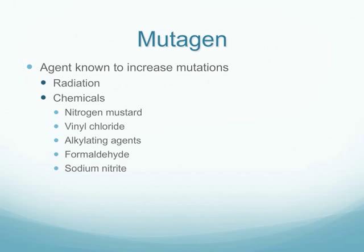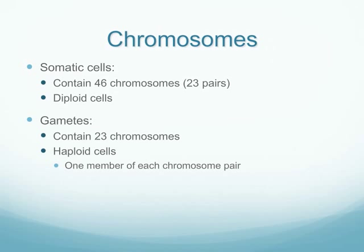As you've probably heard in the popular media, things like radiation or chemicals can cause genetic alterations. A number of different chemicals can cause genetic mutations. Our somatic cells contain 46 chromosomes and are called diploid cells because they contain pairs, whereas our gametes only contain 23 chromosomes and are called haploid cells. One way to remember: 'hap' sounds like 'half,' so haploid contains half the chromosomes of a somatic cell.